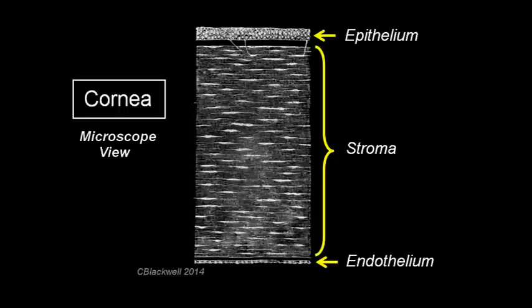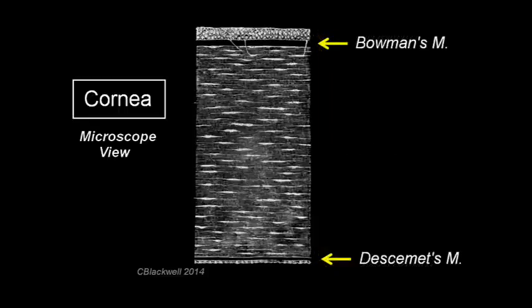In addition to the corneal layers we talked about so far, there are three layers we didn't mention. At the front of the stroma is a denser layer of collagen called Bowman's membrane. At the back of the stroma is Decime's membrane, the basement membrane of the endothelial layer.